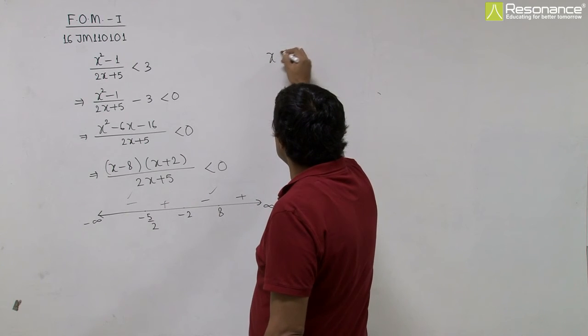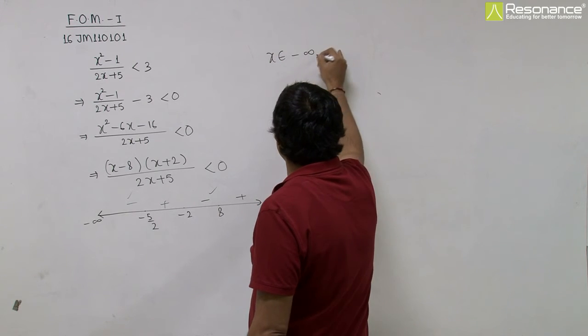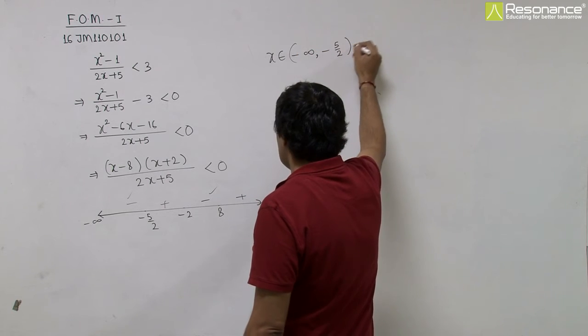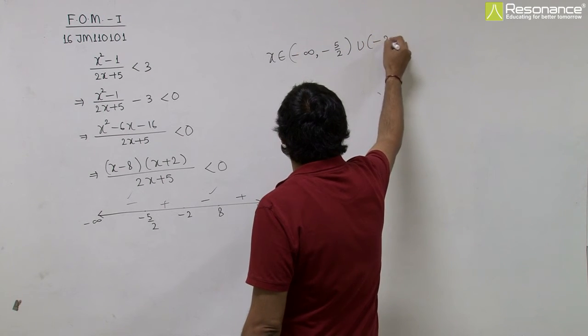So x belonging to minus infinity to minus 5 by 2, union minus 2 to 8.